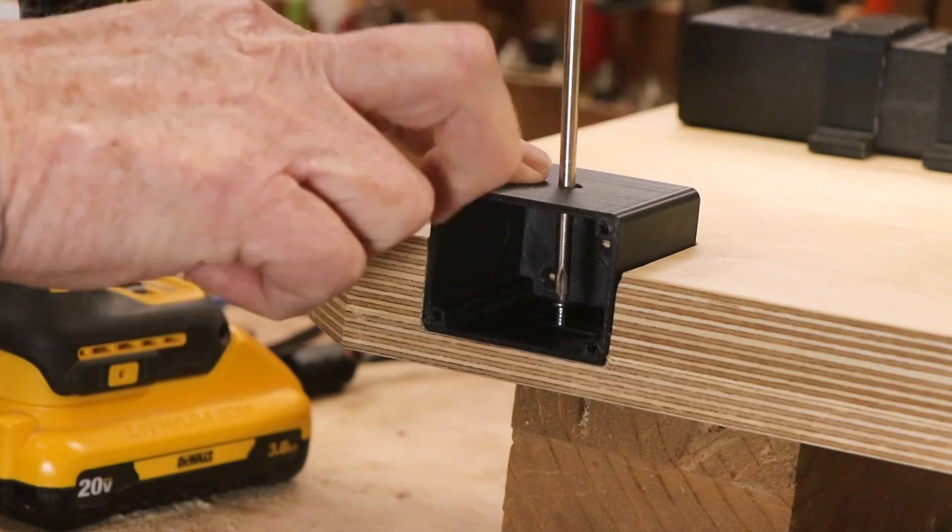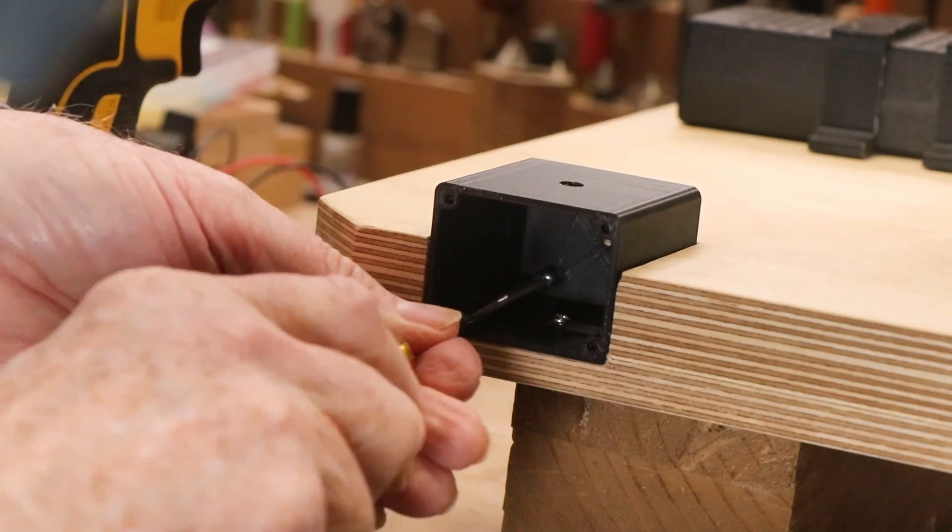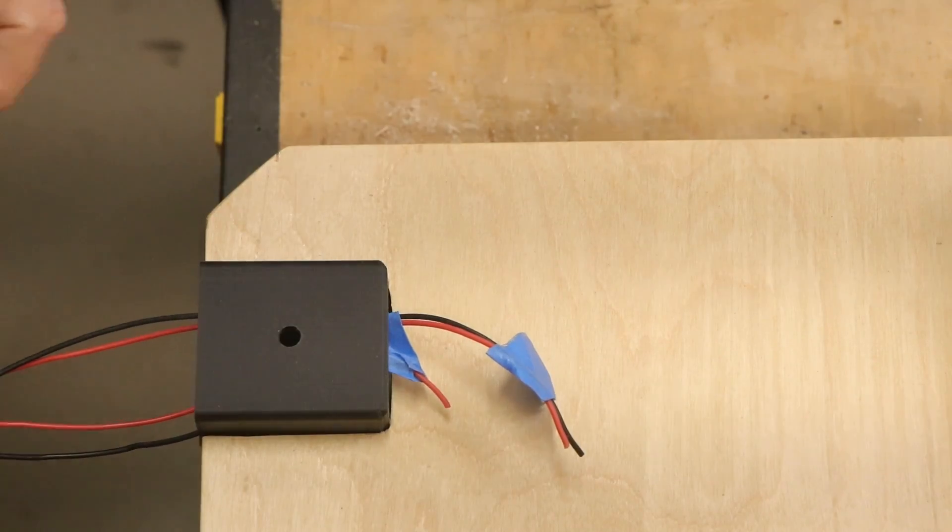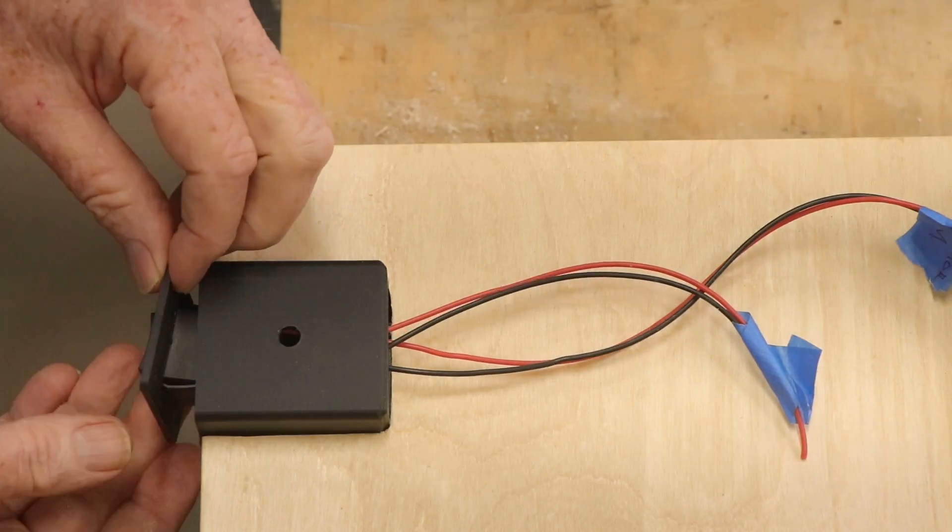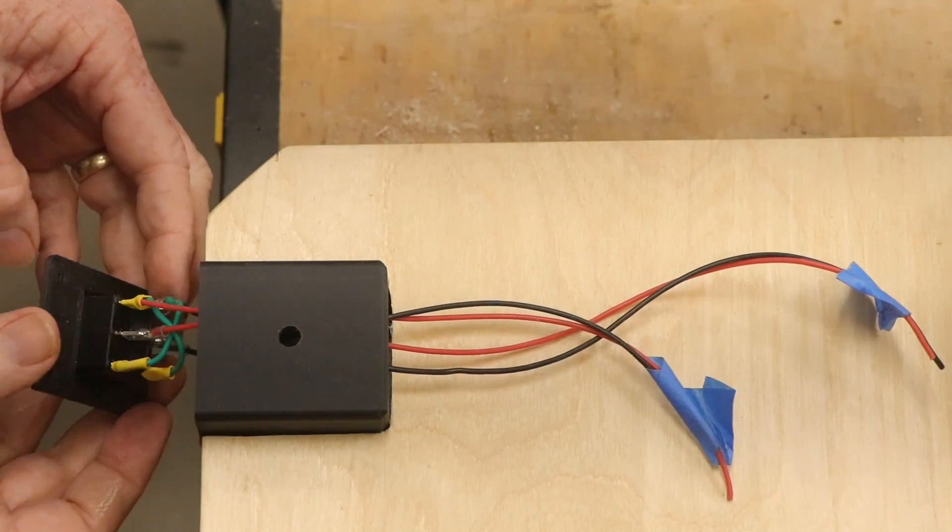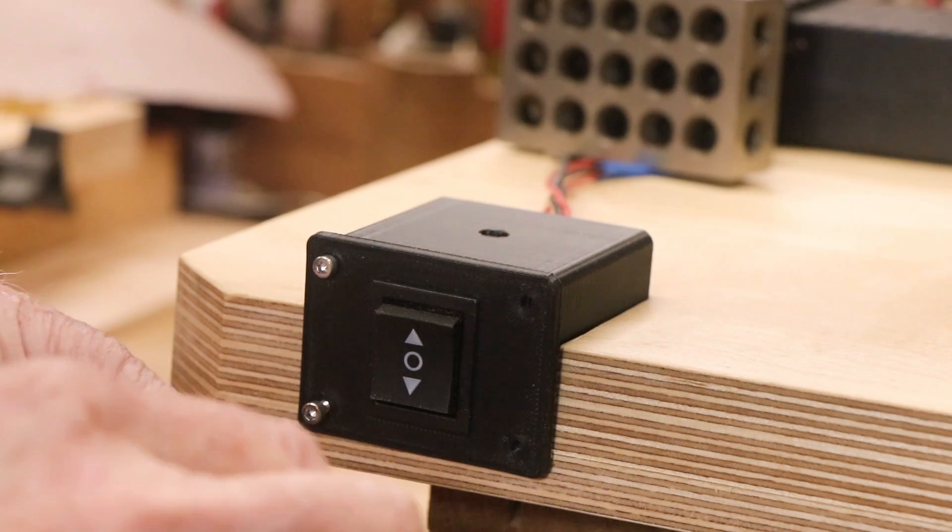I printed a very small box to house the switch and recessed it into the table edge. This is low-voltage electricity, so a box is not strictly necessary, but it's neater and it protects the connections. The wires also need some protection and management, so I printed a couple of simple wire guides.